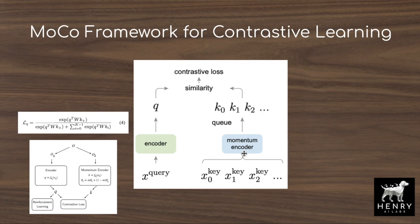The update is M times the previous key encoder parameters plus (1 - M) times the new query network parameters. The momentum hyperparameter is best set at something like 0.99999, meaning you take very slow steps updating the key encoder relative to the query network, so that the keys in the queue don't become too outdated.